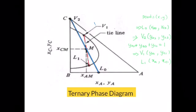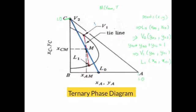You can also label V1 and L1 on the ternary phase diagram. Remember the maximum value for the X axis is 1.0. Similarly, if you want to label point M, its coordinates are given by XAM and XCM.